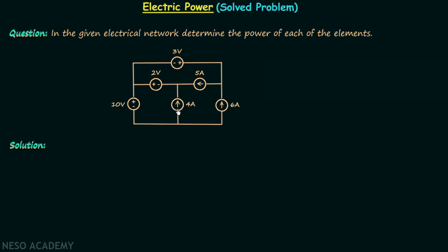In this network there are 6 elements, and we are required to calculate the power of each and every element. We know power equals the product of current and voltage, so we need both — but neither current nor voltage is fully given for any element. For some elements voltage is given but current is unknown; for others, current is given but voltage is unknown.